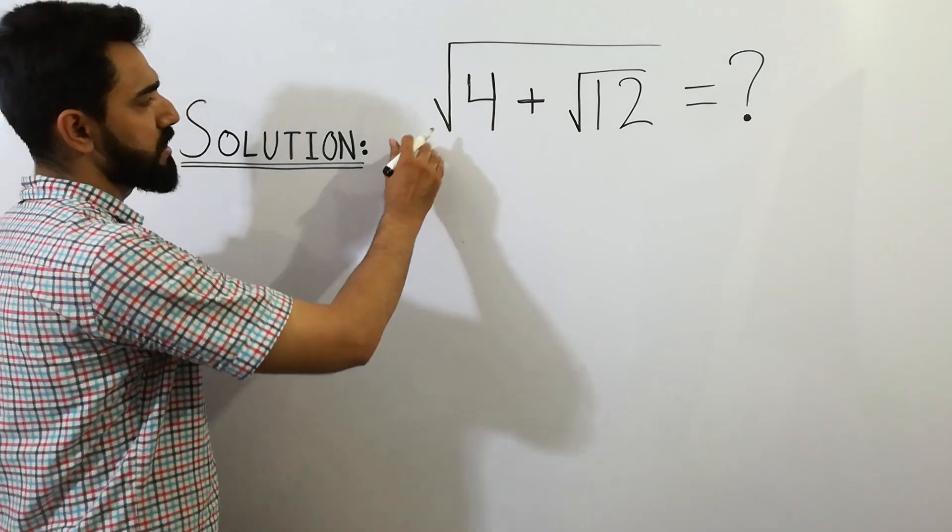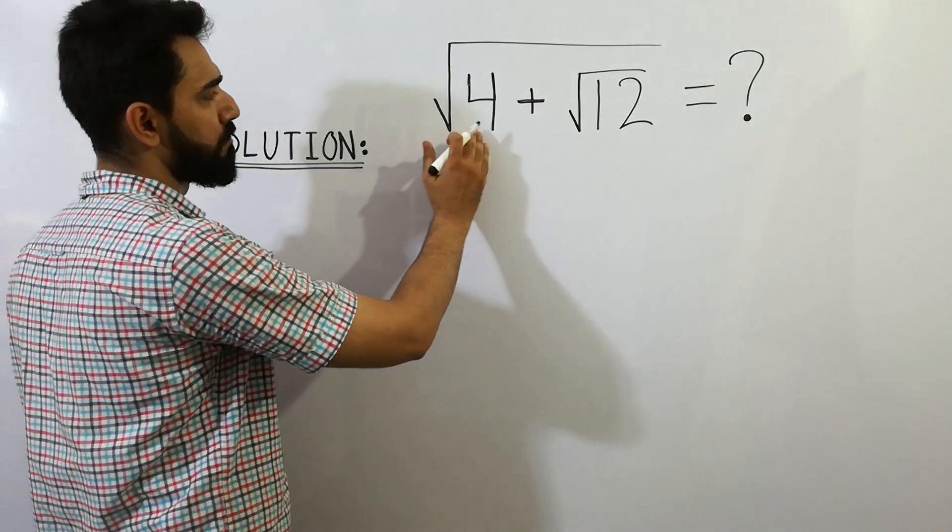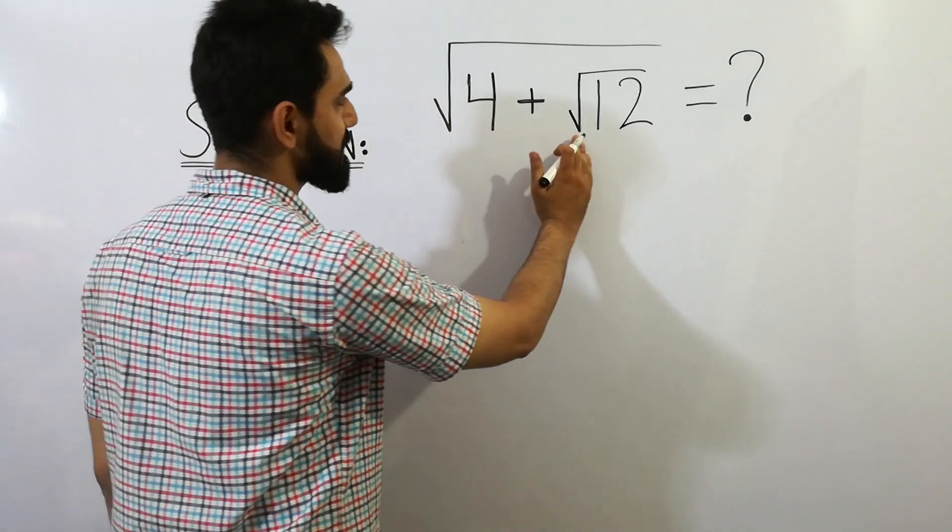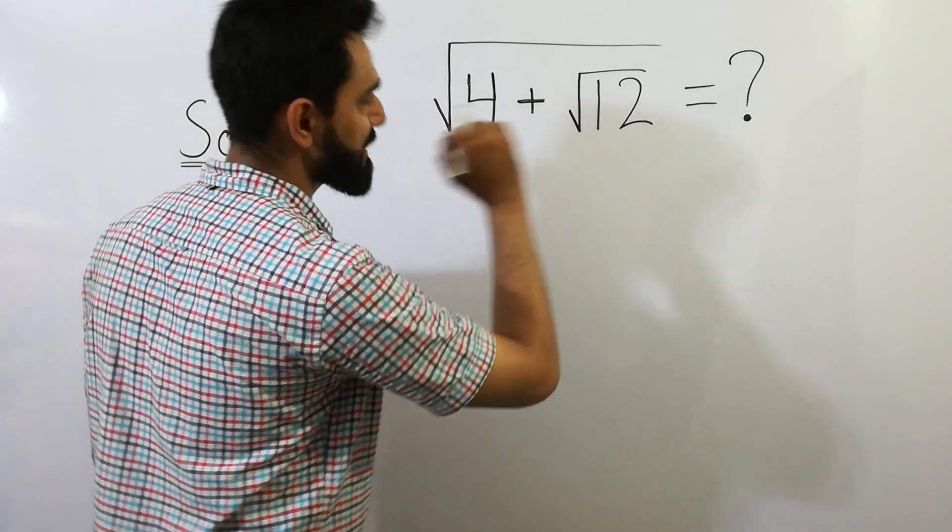Guys, square root of 4 plus square root of 12 is equal to what?